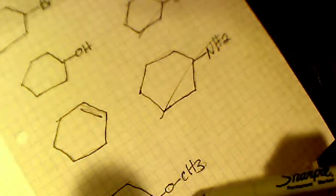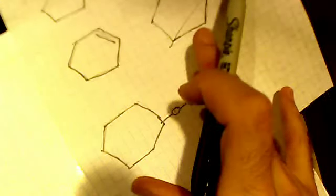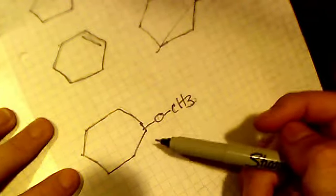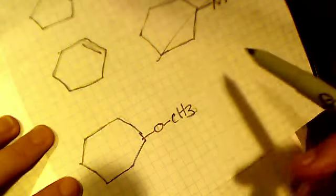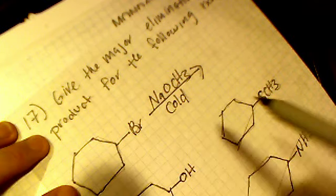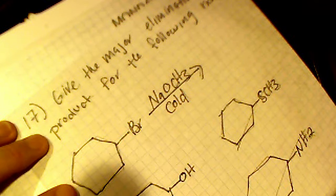This would be from an SN2 reaction, right? This bottom one would be from an SN2 reaction if the methoxide ion came in from the opposite side of the bromine. It kicked it off and created an SN2 reaction.